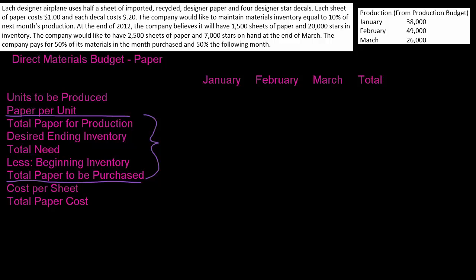So don't get overwhelmed by this. When you're doing your direct materials budget, the point is to take the units that you were going to produce — notice we start with units to be produced — convert it to material, then go through all your calculations with desired ending inventory and beginning inventory, and then figure out how much material you're going to purchase. That's why we say 'total paper to be purchased.' Then figure out how much it's going to cost. Let's take this step by step.